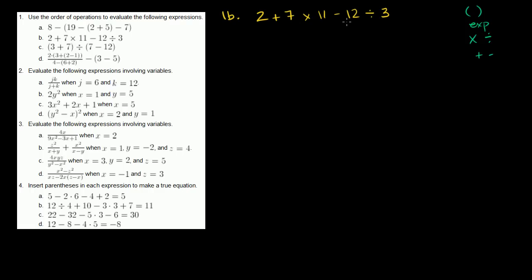Looking at 1b, there are no parentheses and no exponents, so the priority goes to multiplication and division. We're going to do our multiplication and division before we do any addition or subtraction. So 7 times 11 is 77.